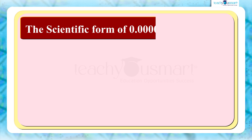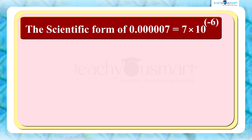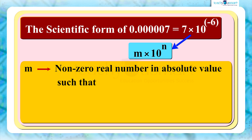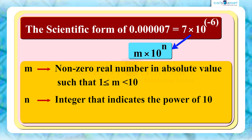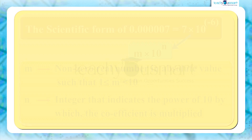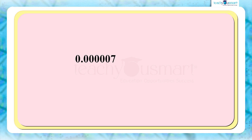The scientific form of 0.0000007 is 7 multiplied by 10 raised to minus 6. This is in the form m multiplied by 10 raised to n, where m is a non-zero real number in absolute value such that 1 ≤ m < 10, and n is an integer that indicates the power of 10 by which the coefficient is multiplied.